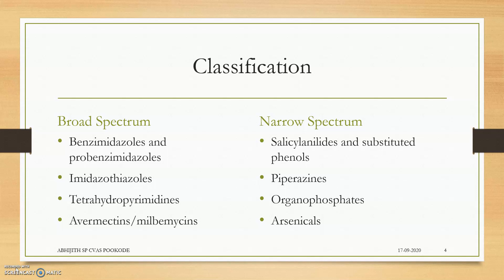Continuing the broad spectrum: imidazothiazoles, tetrahydropyrimidines, and avermectins or milbemycins — these are the broad spectrum anthelmintics. The narrow spectrum includes salicylanilides, substituted phenols, piperazines, organophosphates, arsenicals, and other drugs.